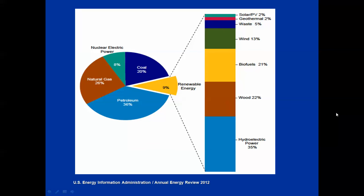Nuclear power represents only 8%. The piece I want to show you is the piece pulled out to the right: 9% of all the energy produced in the United States is coming from all renewable energy sources. So if you look at every one of those — hydroelectric, wood, biofuels, wind, waste, geothermal, and solar photovoltaic — all of it comprises only 9% of our existing energy production.